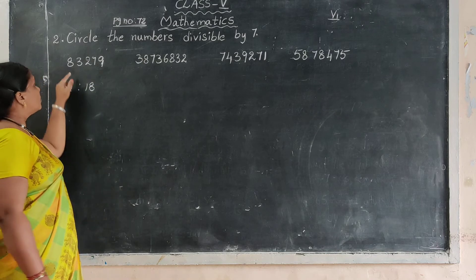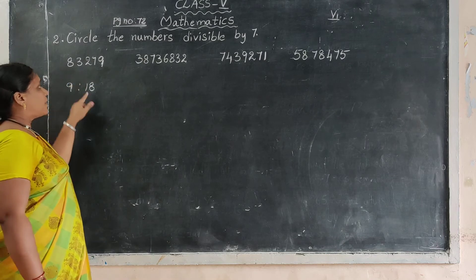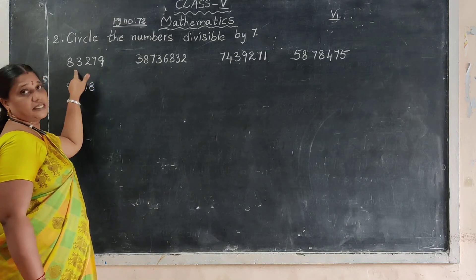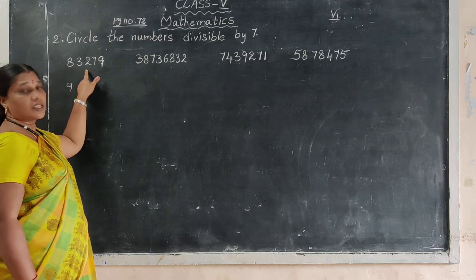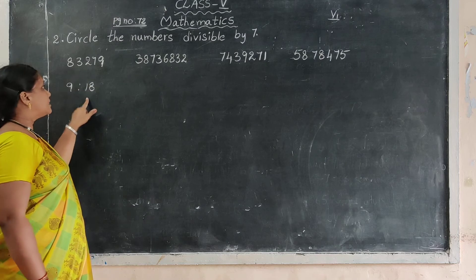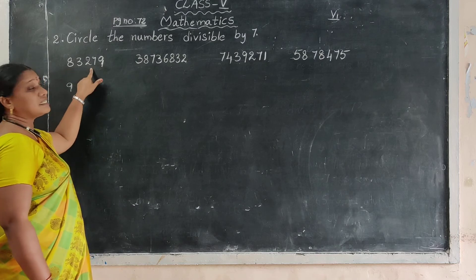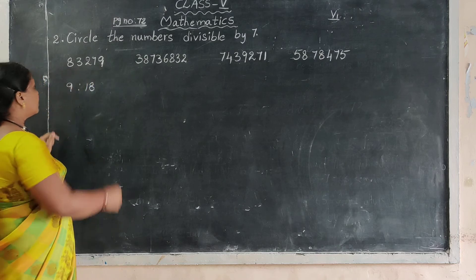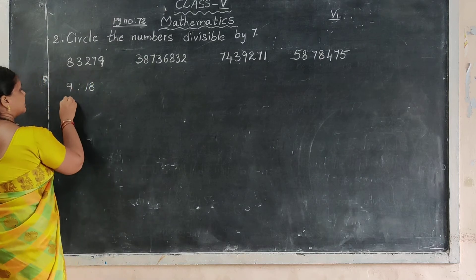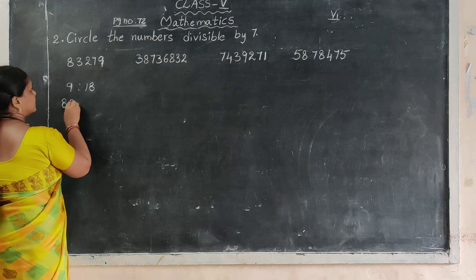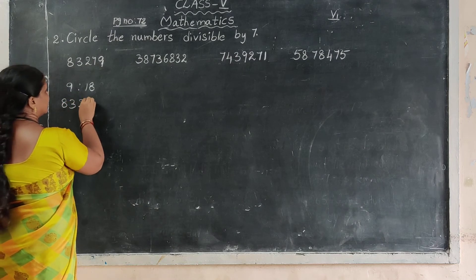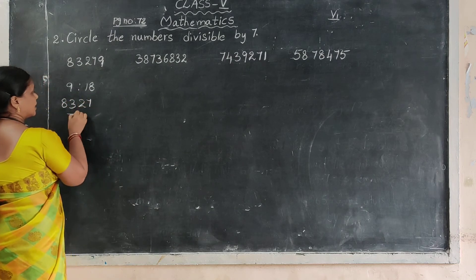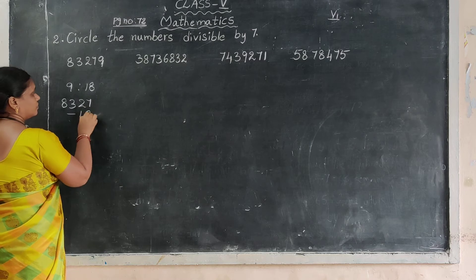Now subtract 18 from the rest of the digits. The rest of the digits are 8,327. Subtract: 8,327 minus 18.